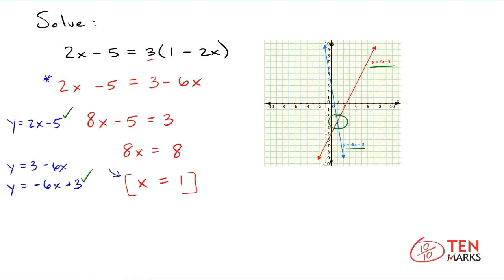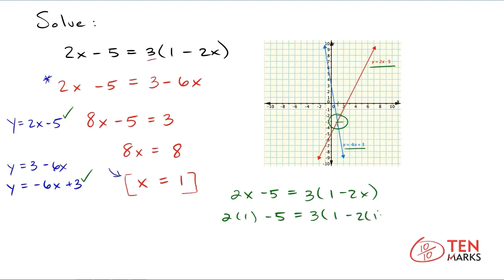You can see it on the graph, but if you don't graph it, the way to check it is to substitute x equals 1 into the original equation. So if you have 2x minus 5 equals 3 times 1 minus 2x, substitute in the value of 1 any time that the variable x appears. So here it becomes 2 times 1 minus 5 equals 3 times 1 minus 2 times 1 on the right side. On the left, 2 times 1 is 2 minus 5.